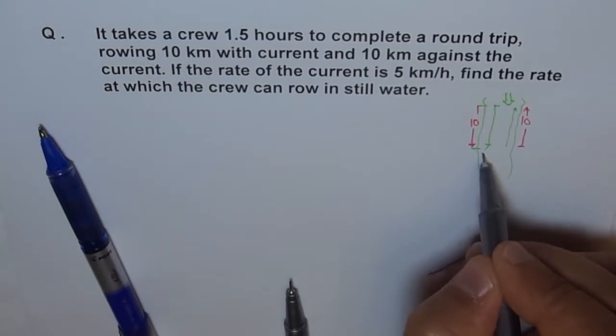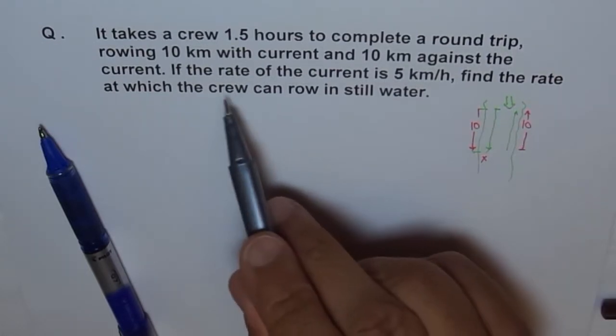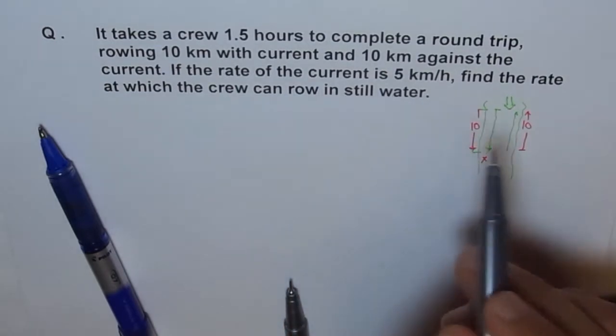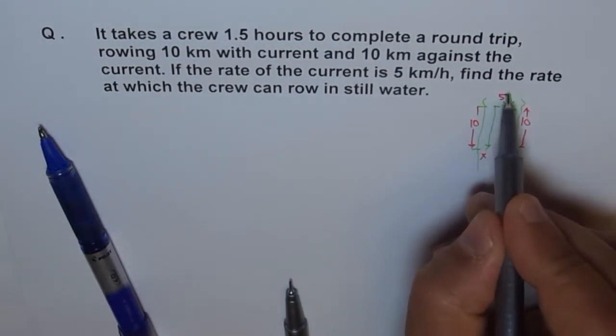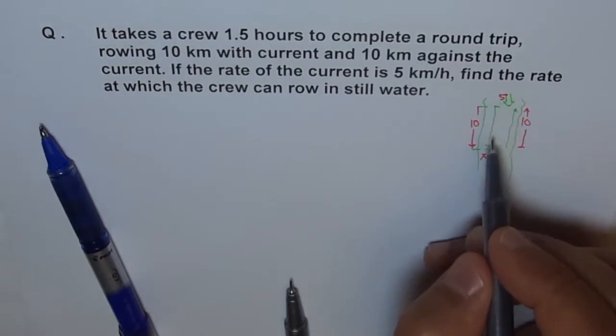So, when you are going down, the speed is X for the crew. And what is the water? The rate of current is 5 kilometers. So, this is 5 kilometers per hour flowing downwards. So, when you go down, this helps you, correct?